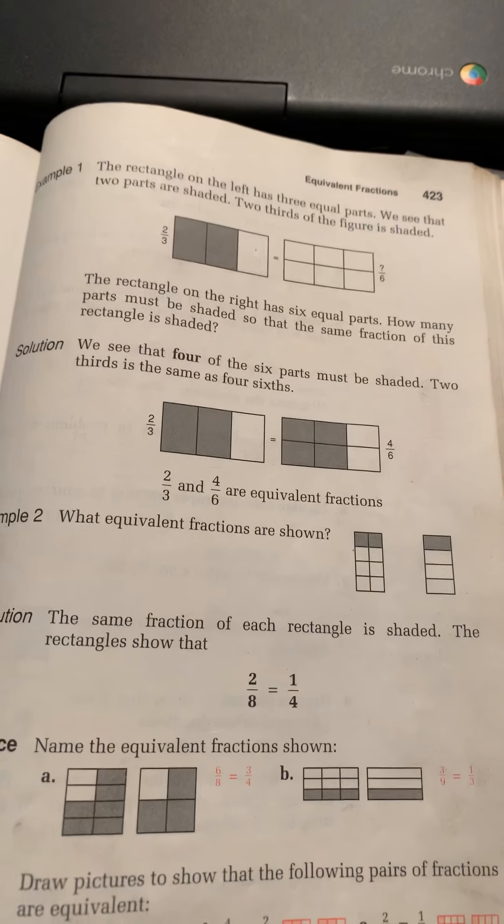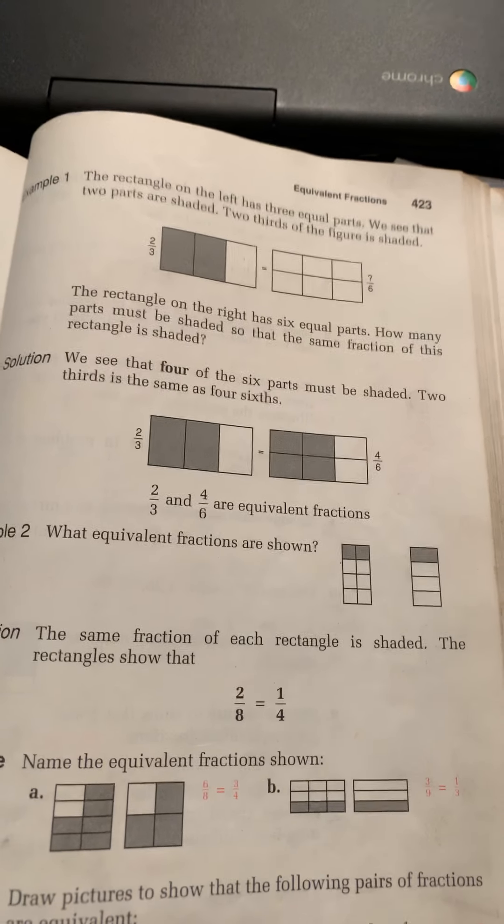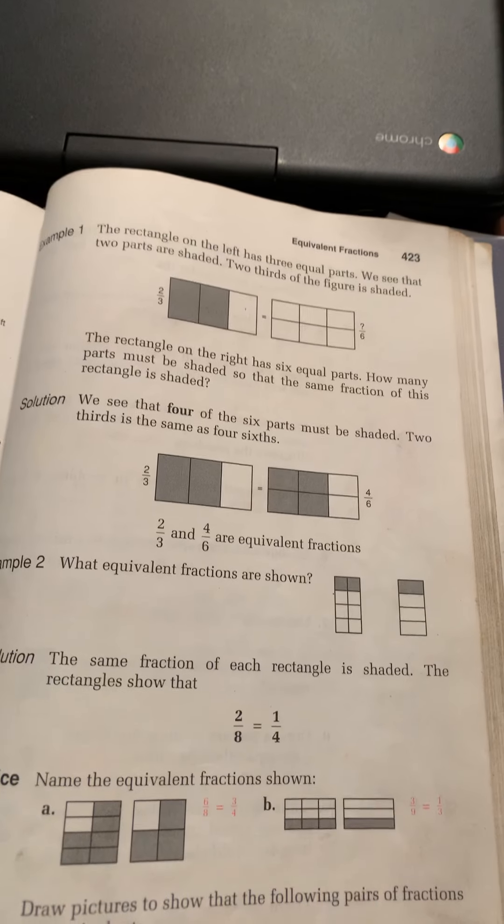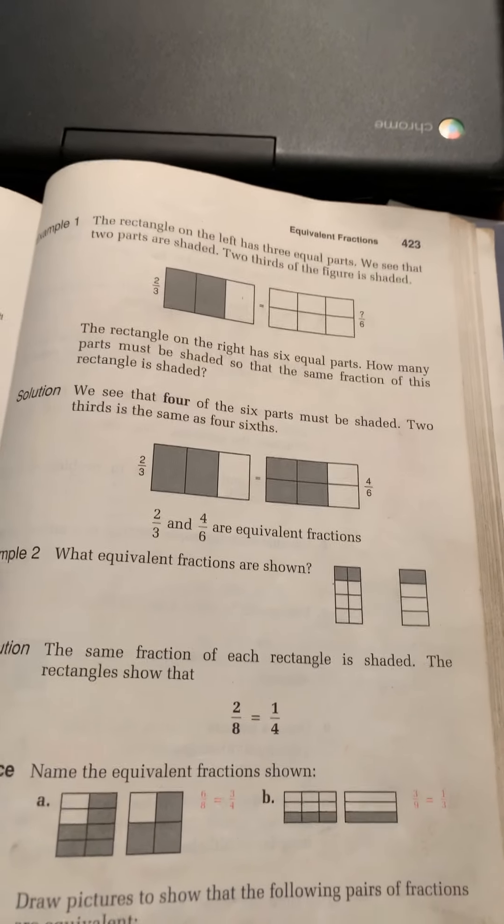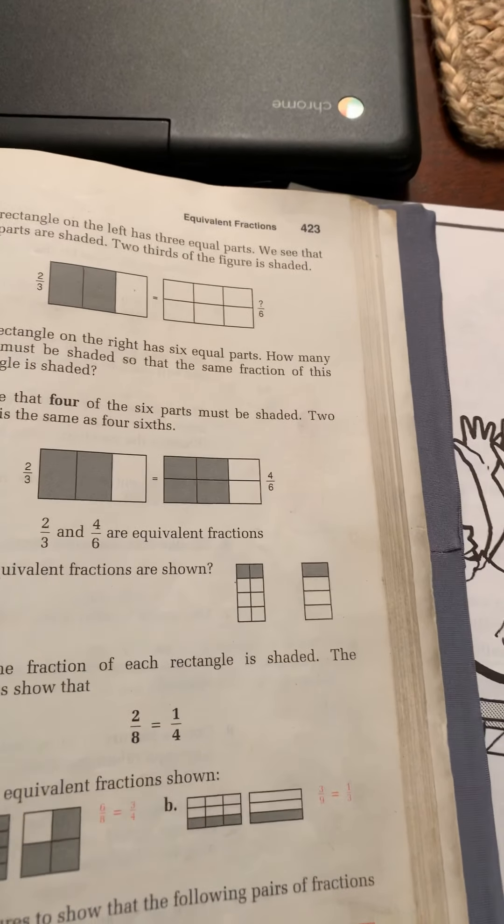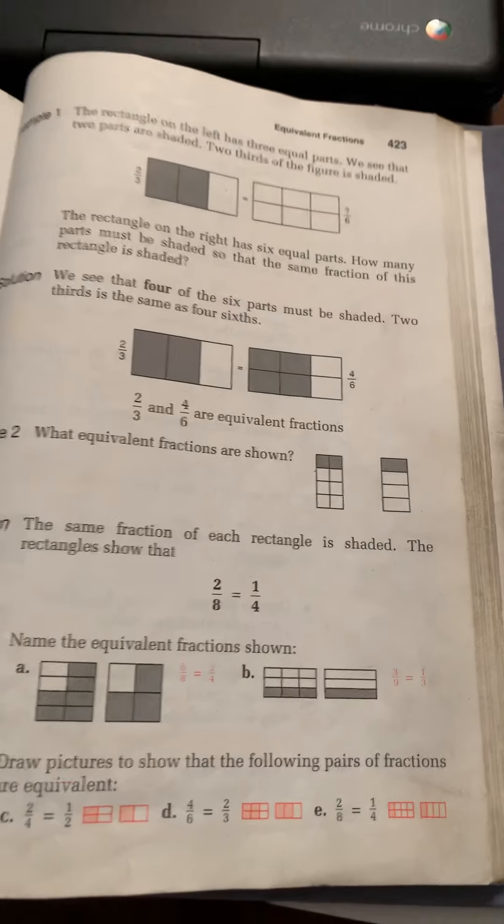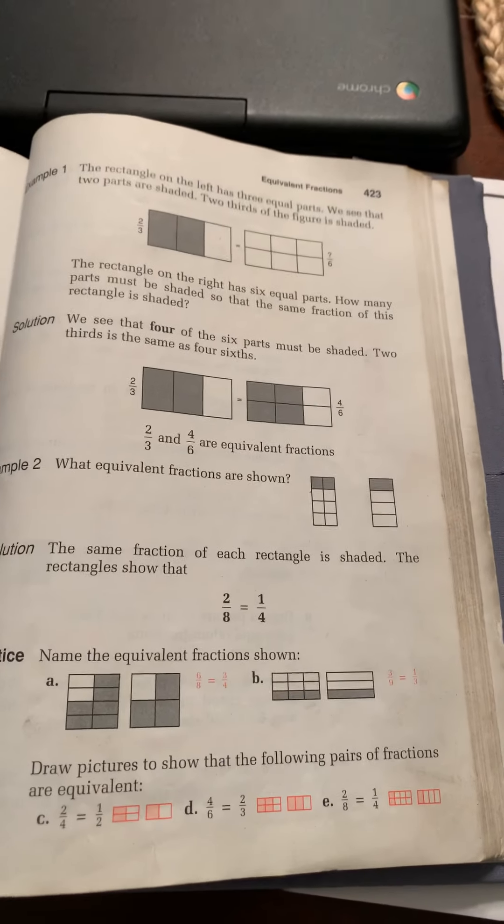And then at the bottom, it says name the equivalent fraction shown for the practice problems. And then C through E are where you draw the pictures. Sorry, I'm going to switch back to the student book. It doesn't have the answers.